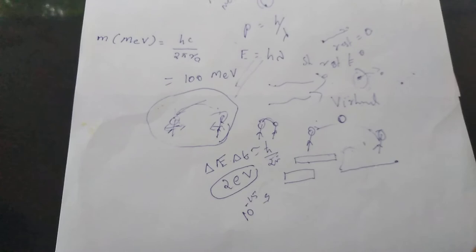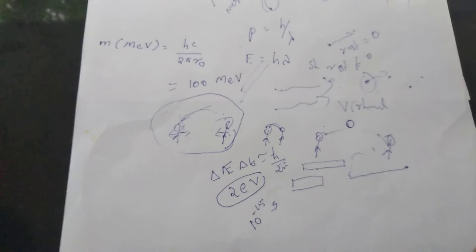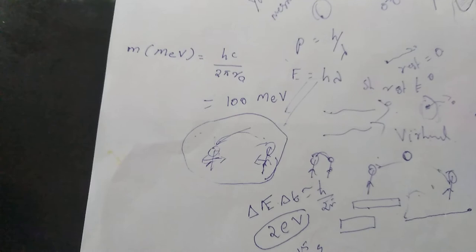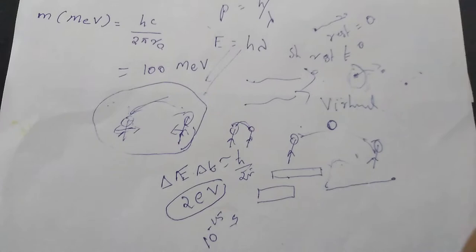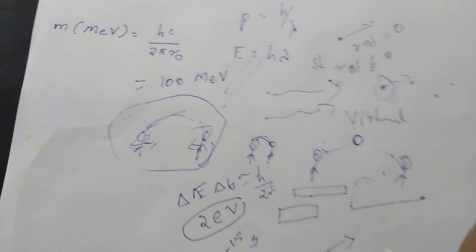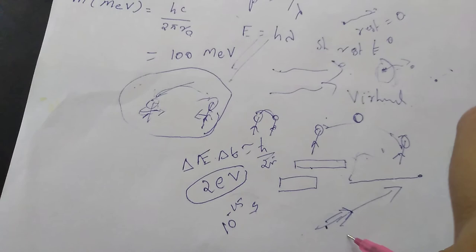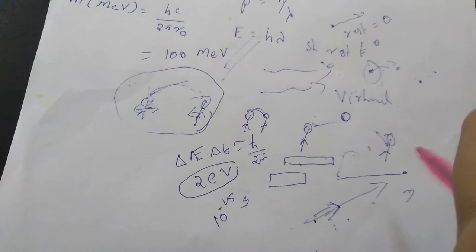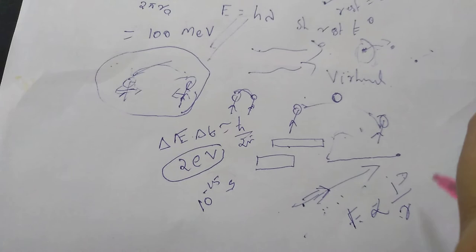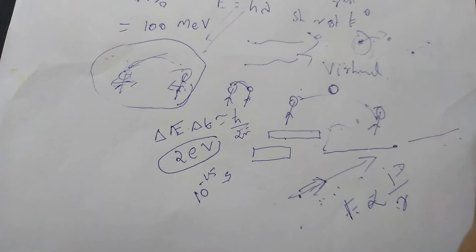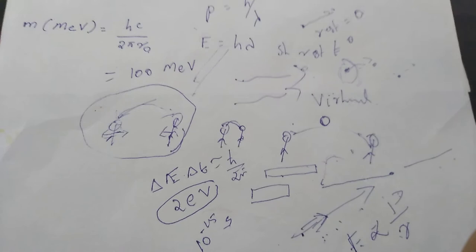For the electrostatic force, we call these virtual photons. If we detect them, it violates the uncertainty principle. These virtual photons are less energetic and can travel infinite distances — that is why electrostatic force has infinite range. The electrostatic force decreases with distance, and the force is proportional to the distance in this framework. The uncertainty principle governs the probability and range of the force.